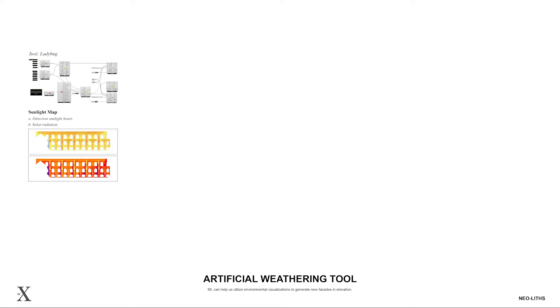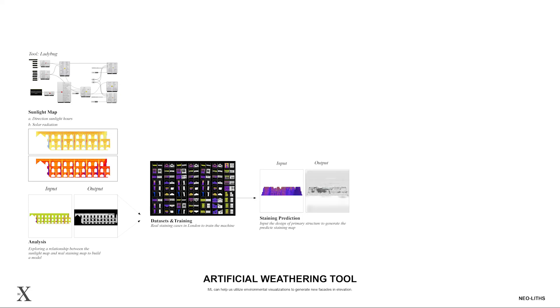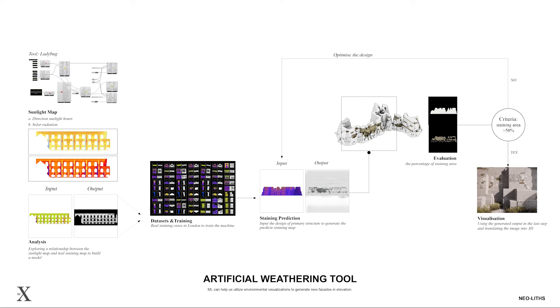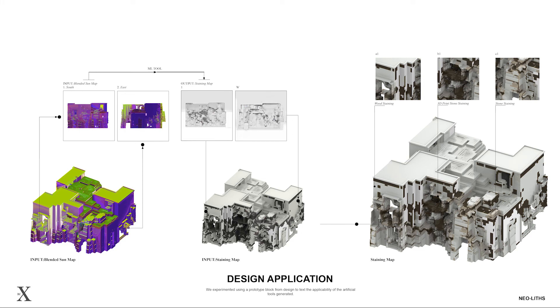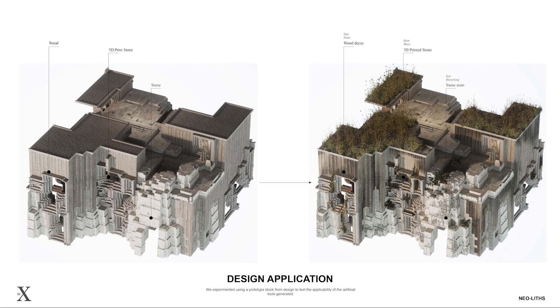A dataset is created by using the fully weathered building facade. The radiation map helps establish a relationship between sun and staining. The elevation obtained after rain analysis is used as an input to generate a predicted staining map, and then a criteria set up to evaluate the design. A combination of solar and rain weathering prediction tools, along with textures that intensify these conditions, are applied to a portion of the design to visualize its effects. This is a visualization comparing the aspects of the materials before and after being exposed to the weather.